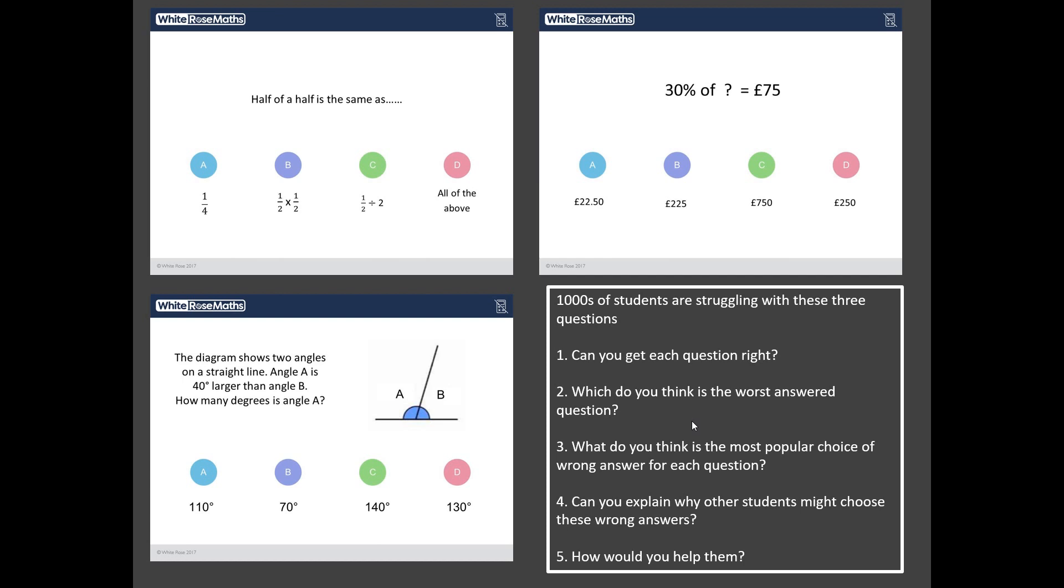Challenge two, out of these three questions, what do you reckon the worst answered question is? And then can you predict for each question what the most popular choice of wrong answer is? And then, can you explain why other students might choose each of these popular wrong answers? And then finally, and I think this is the hardest challenge of them all,